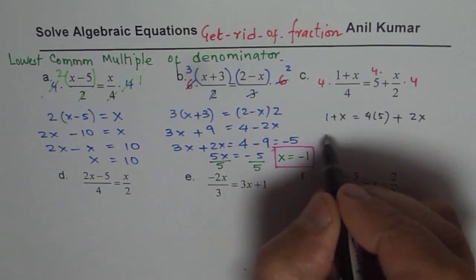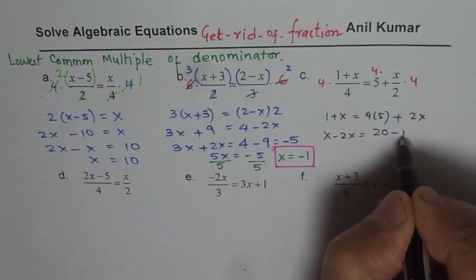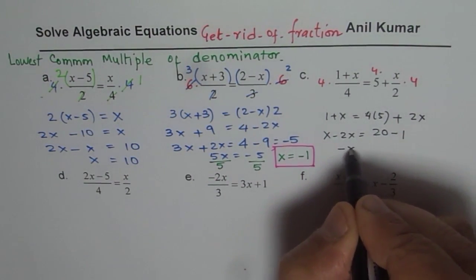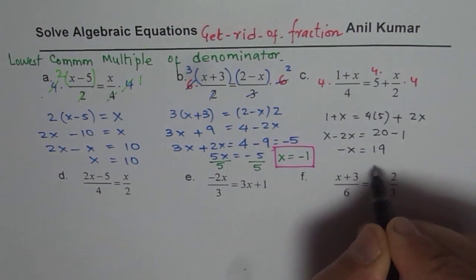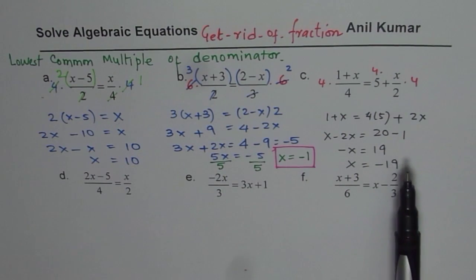So we have x minus 2x equals to 4 times 5 is 20 minus 1. And that is minus x equals to 19. And x will be equal to minus 19. So that becomes the solution for the third equation. Right?